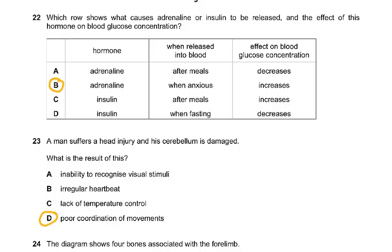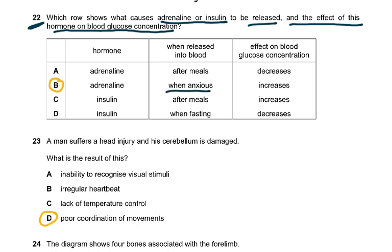Start with question 22: which row shows what causes adrenaline or insulin to be released? Adrenaline and insulin are hormones. Adrenaline is released into blood when you are anxious, and it converts glycogen to glucose so the blood glucose increases.